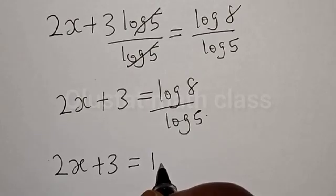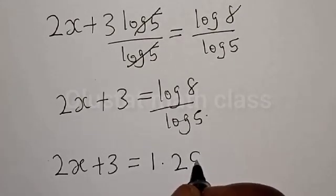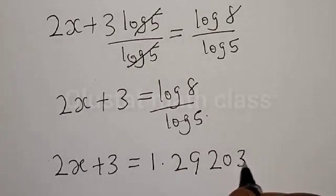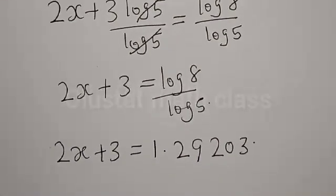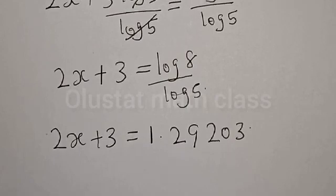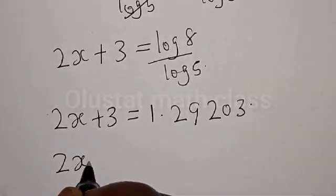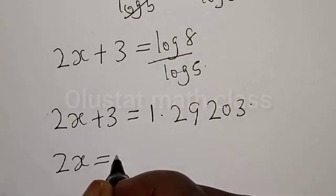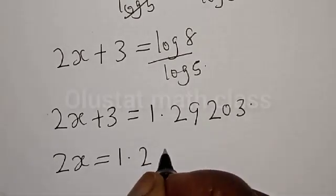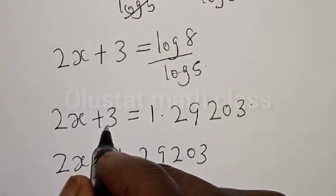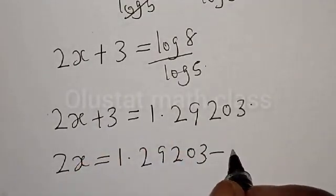Then we have 2x is equal to 1.29203. If this plus 3 crosses the equal sign it becomes minus 3.